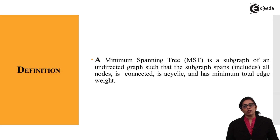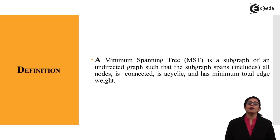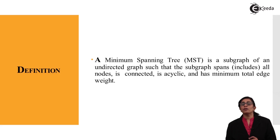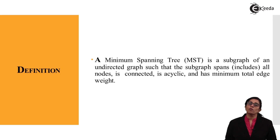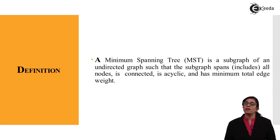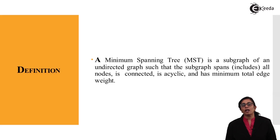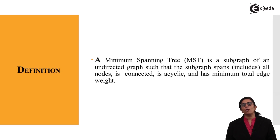For a minimum spanning tree, the graph has to be undirected, the weights have to be attached to the graph to find the cost of the total spanning tree, and it should not form a cycle. These are the three major conditions: first, it should be an undirected graph; second, weights must be attached to each edge; and third, nowhere should the graph form a cycle.